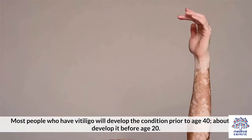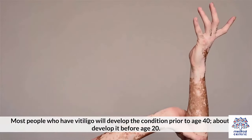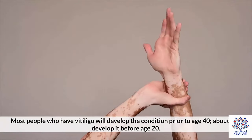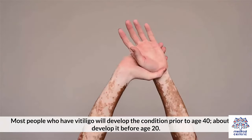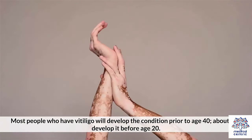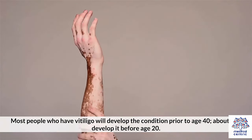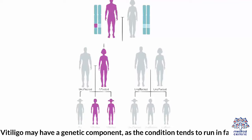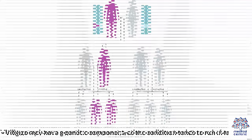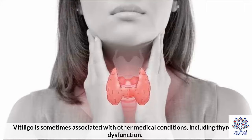Most people who have vitiligo will develop the condition prior to age 40. About half develop it before age 20. Vitiligo may have a genetic component, as the condition tends to run in families. Vitiligo is sometimes associated with other medical conditions, including thyroid dysfunction.